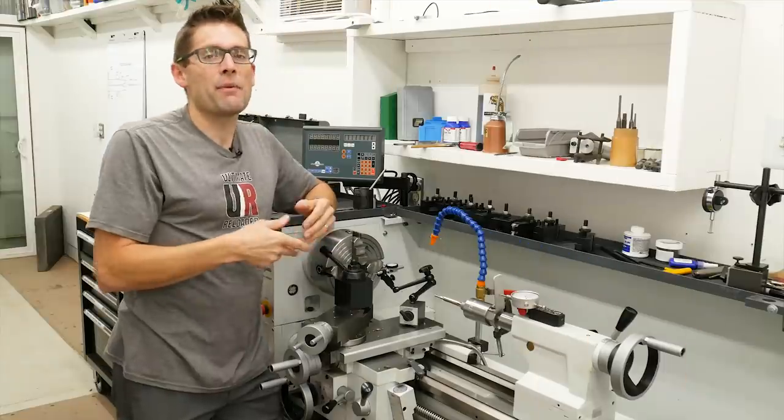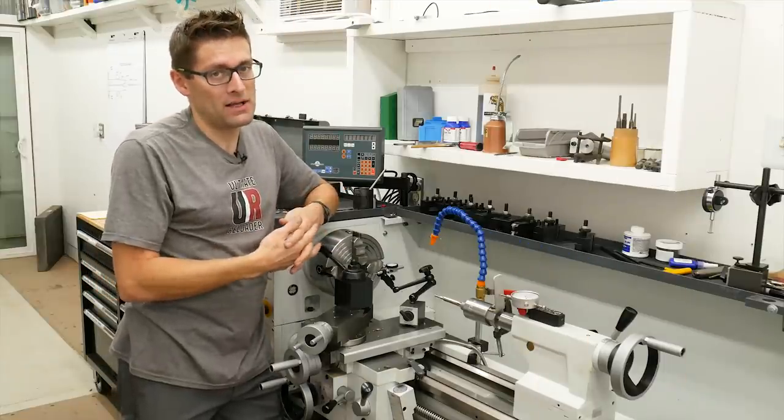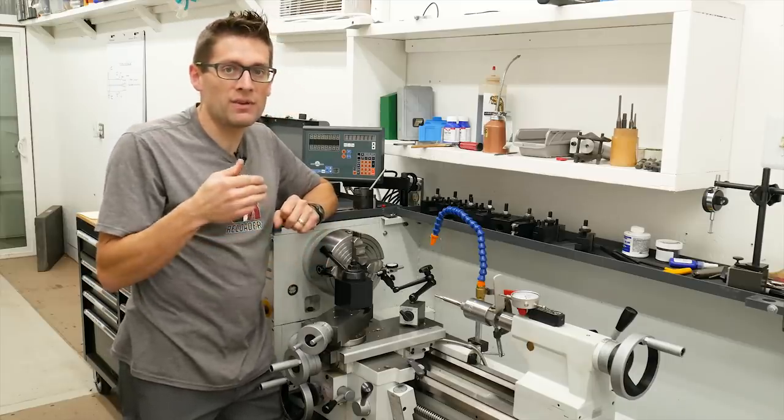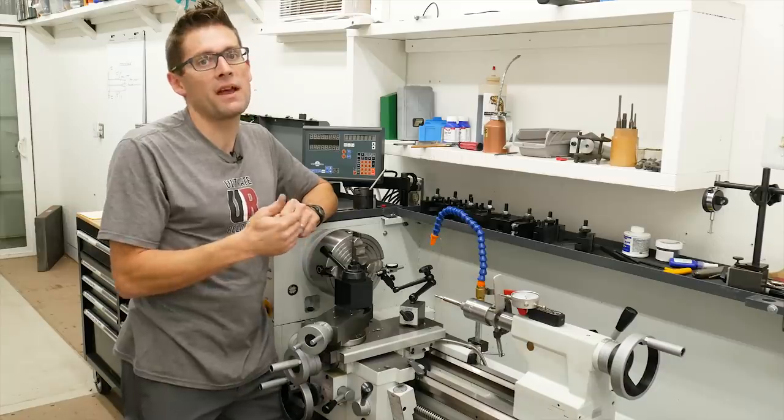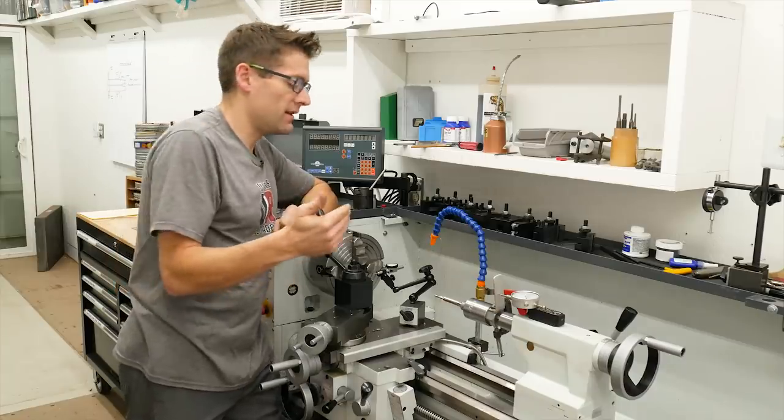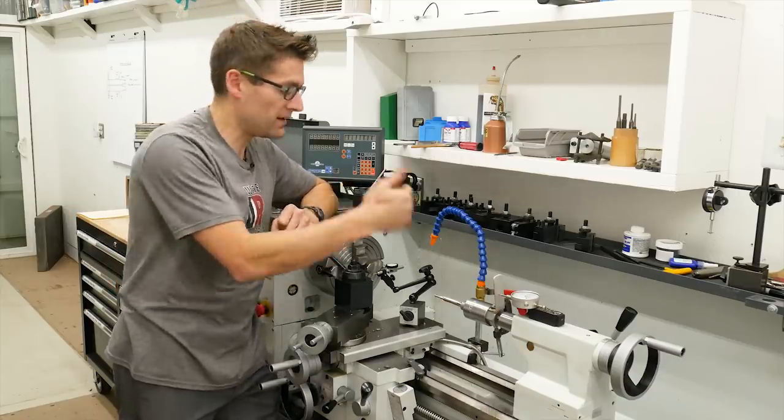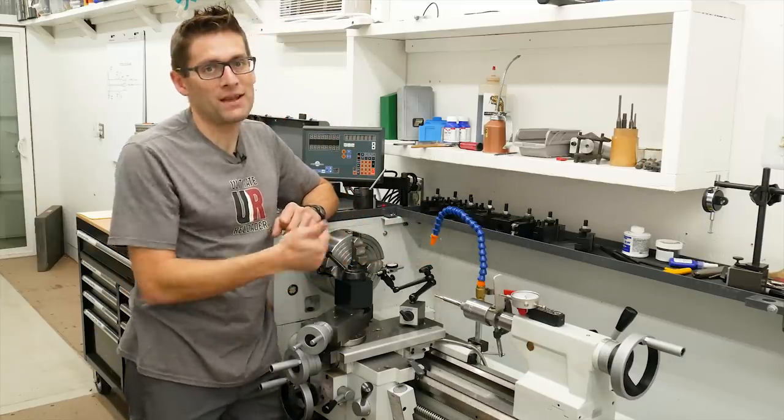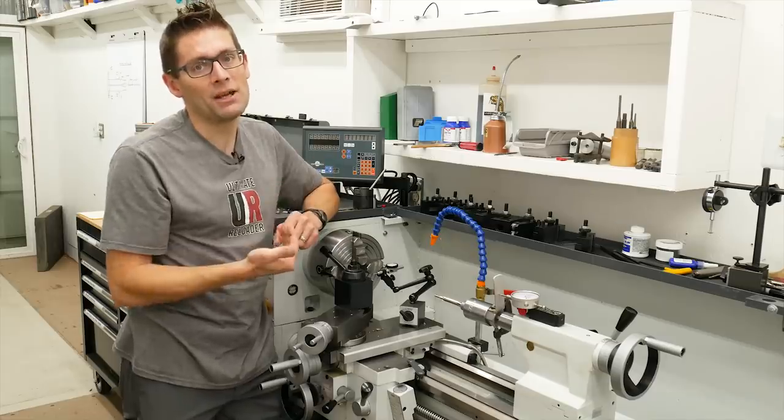So this is why we cut the tenon a little bit long. When we do our thread relief and when we square up the shoulder, we're going to be altering that tenon length. I usually like to get those perfect in terms of their dimensionality and the finish and then go out to the face and just face the tenon down to the appropriate length.